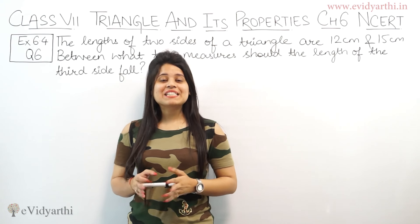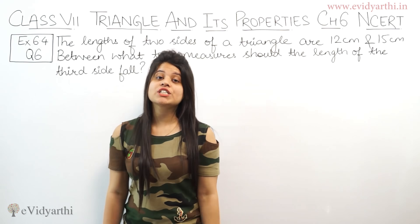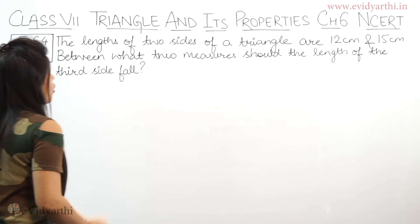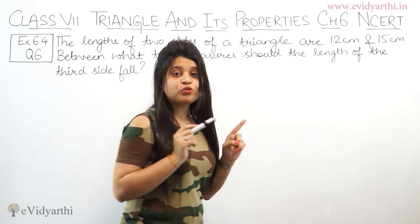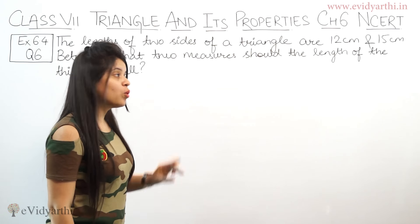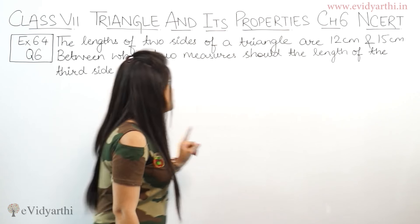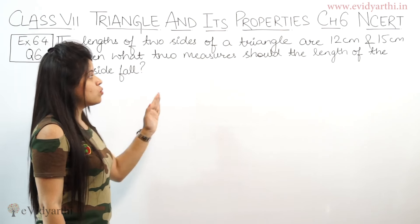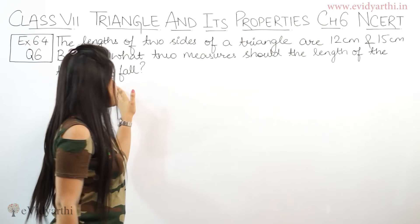Hello everyone, this is Nansi from Evidyanti Church. Now starting with question number 6, exercise 6.4. The lengths of two sides of a triangle are 12 cm and 15 cm. Between what two measures should the length of the third side fall?